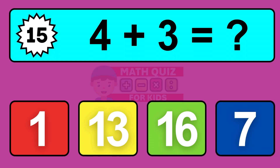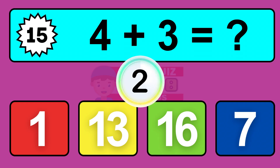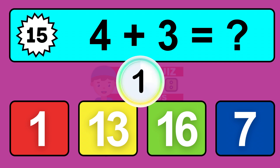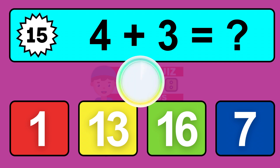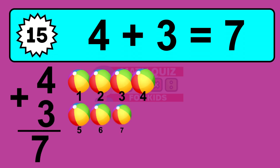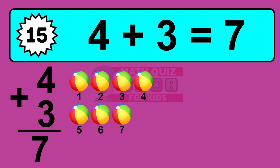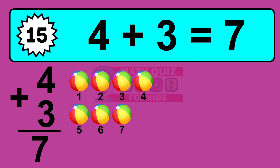Question 15. 4 plus 3 equals what? The answer is 4 plus 3 is 7. Let's count it: 1, 2, 3, 4, 5, 6, 7.